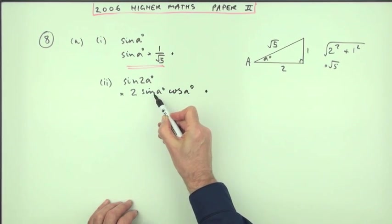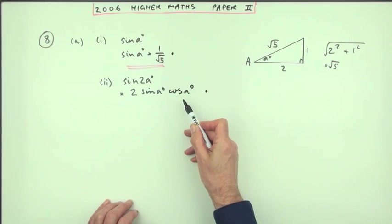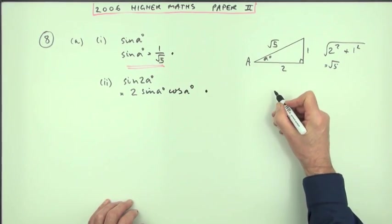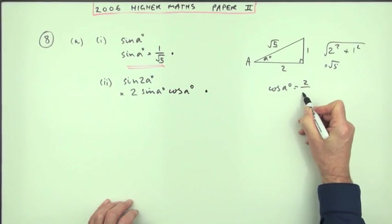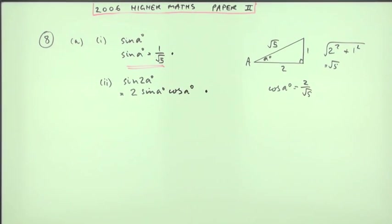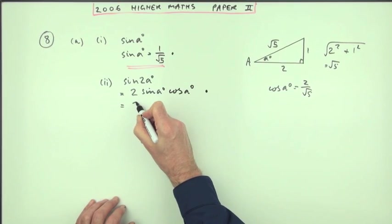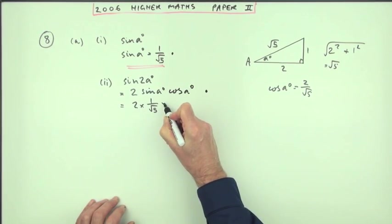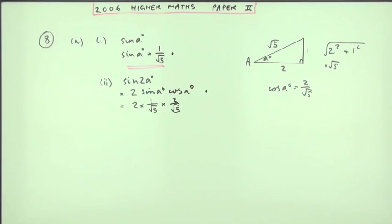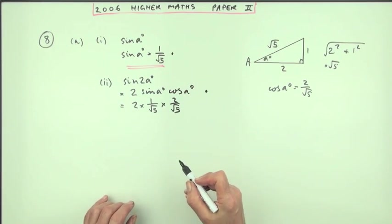Now I know the two. I know sine A is one over root five. What's the cos of A? So I have to go back to here. What is the cos of A? The cos of A is the adjacent over the hypotenuse. That's two over the root five. So if I put that in two times one over root five times two over root five then I'm heading towards the final mark for part eight.